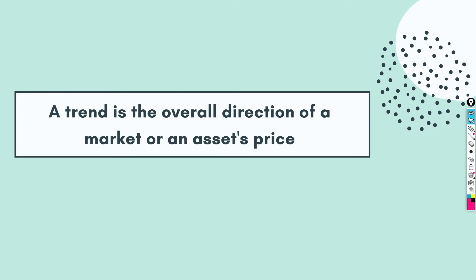What is a trend? A trend is the overall direction of a market or an asset's price. Simply put, a trend is a direction. Being a price action trader, identifying the trend is very important — it helps you decide whether to buy or sell in the market, and helps you find the right entries and right exits.